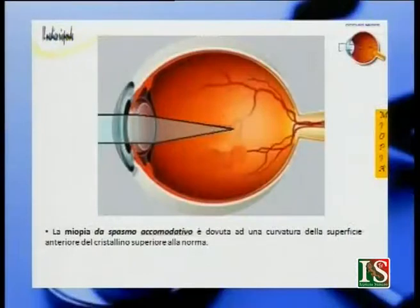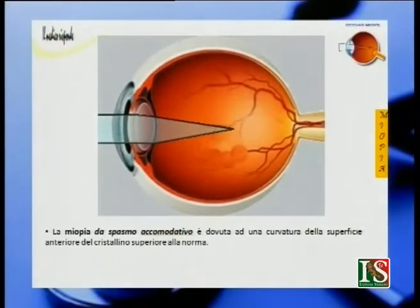Vediamo invece adesso la miopia da spasmo accomodativo. Questo tipo di miopia è dovuto a una curvatura della superficie anteriore del cristallino superiore alla norma. Vediamo insieme i sintomi della miopia.